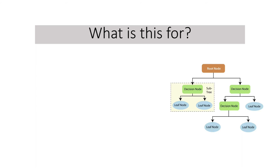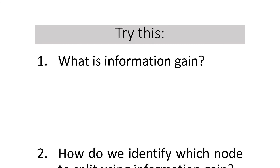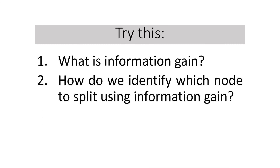This method of splitting strategy can help us identify which feature to use for splitting in classification problems of a decision tree algorithm. Let's try to answer: what is information gain, and how do we identify which node to split using information gain? Please write your answers in the comments below so that we can have a rich interaction of ideas and learn from each other.